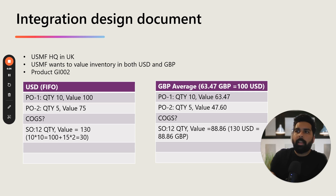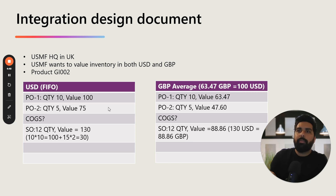In GBP, if you remember our previous example, we set up the valuation method as average and selected the currency as GBP. So all these transactions we want to convert into GBP with the average value. PO1 with 10 quantity will be converted to GBP 63.47, based on the exchange rate defined in the global inventory accounting ledger setup — 63.47 GBP equals $100. Then for the 5 quantity which is $75 USD, in GBP it is going to be 47.60. When I sell 12 quantity, the value is going to be 88.486 based on the valuation. This is our scenario and our expected value.